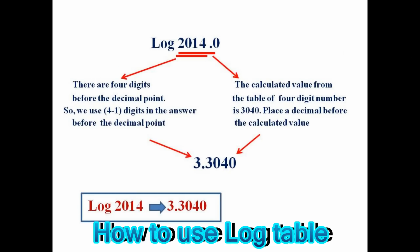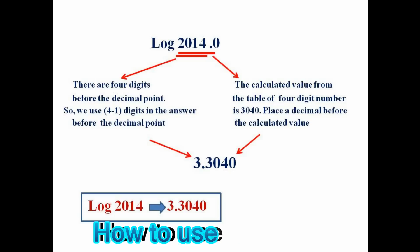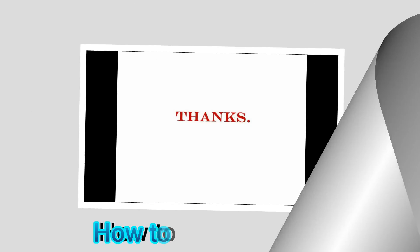Here is one more example: log 2014. In this case, we place the decimal after the 4 digits. The calculated value from the table for the 4-digit number is 3040. Place a decimal point before the calculated value to get 0.3040. From the question, it is clear that there are 4 digits before the decimal point. We use 4 minus 1 digits in the answer. Then the answer becomes 3.3040.